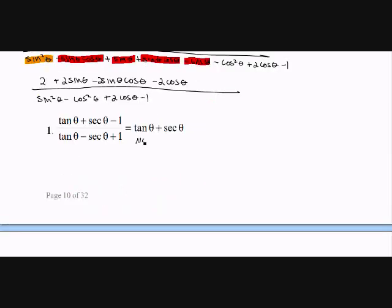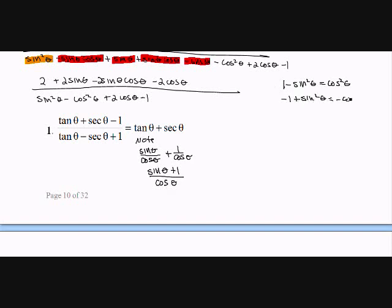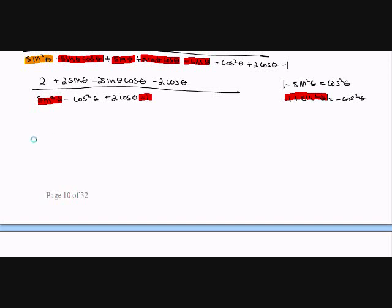So let's take a little peek. Note that sine theta over cosine theta plus 1 over cosine theta is the same as tan theta plus secant theta, giving sine theta plus 1 over cosine theta. So in the denominator I want to get everything in terms of cosines only. I can use the identity: since 1 minus sine squared theta equals cosine squared theta, multiplying by negative 1 gives negative 1 plus sine squared theta equals negative cosine squared theta. So sine squared theta minus 1 equals negative cosine squared theta, meaning I can replace that combination in the denominator with negative cosine squared theta.